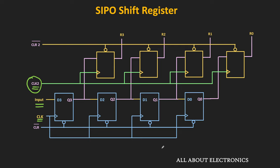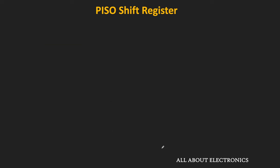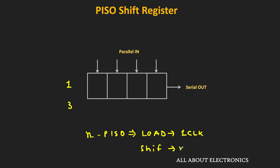That is the Serial In Parallel Out type of shift register. Now let us see the Parallel In Serial Out type of shift register, also known as the PISO register. In this type of register, the data is loaded in parallel but moved out serially. For a 4-bit register, to load the data we require only 1 clock pulse, but to move the data out we require an additional 3 clock pulses. At the 4th clock pulse, we can load new data. In general, for an n-bit PISO register, loading requires 1 clock pulse, and shifting the data out requires an additional n-1 clock pulses, after which at the nth clock pulse we can load new data.